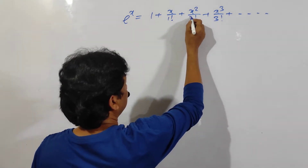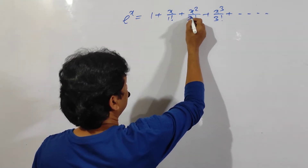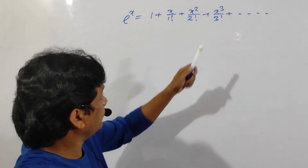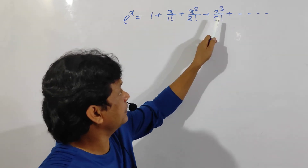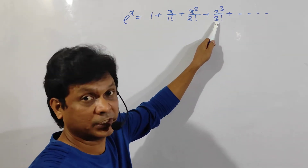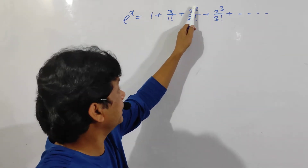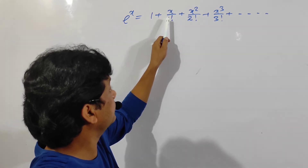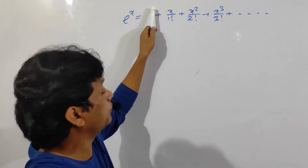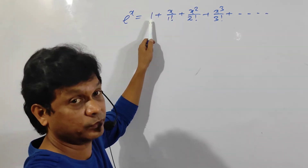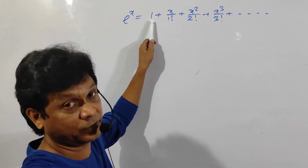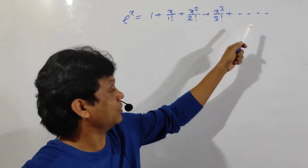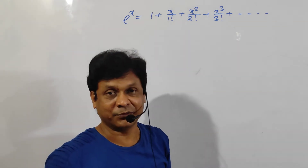The very interesting thing is that if the power of x is 3, then it is factorial 3; if the power of x is 2, then it is factorial 2; if the power of x is 1, it is factorial 1; if the power of x is 0, so divided by 0 factorial. So this is the logic of this formula.